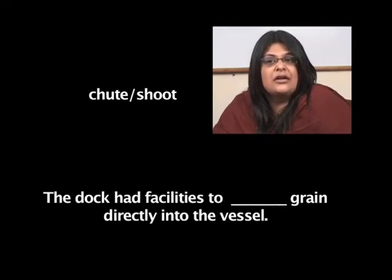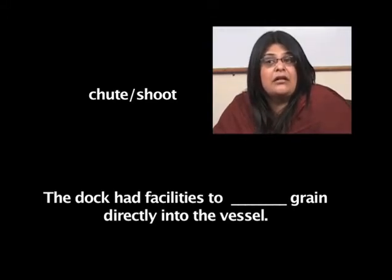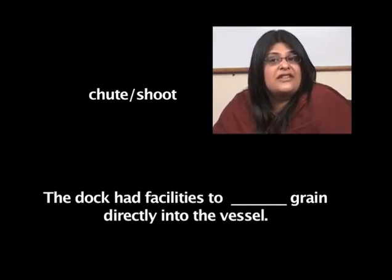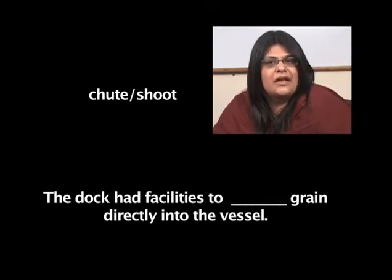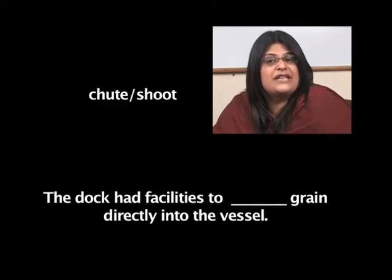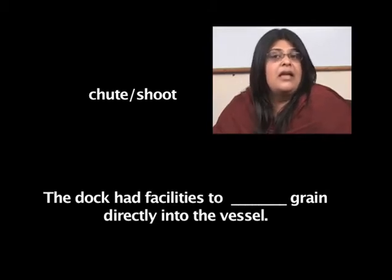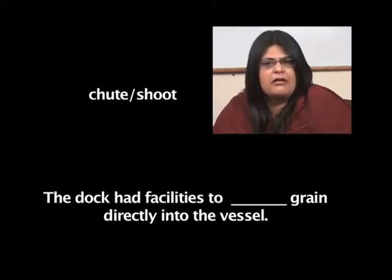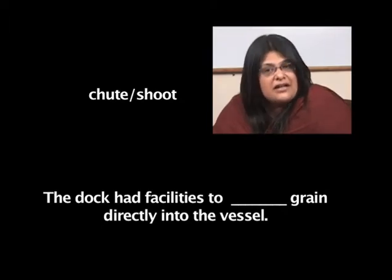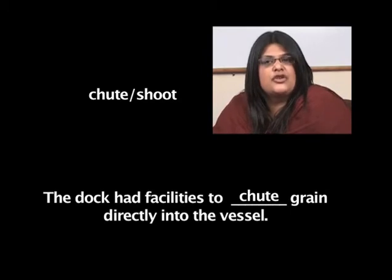Next: 'The dock had facilities to dash grain directly into the vessel.' The options are chute spelled C-H-U-T-E and shoot spelled S-H-O-O-T. Here we are loading grain into a ship. A chute is an inclined channel, tube or shaft for conveying something. Shoot means to pick up a gun and fire a bullet. So the right answer would be chute.